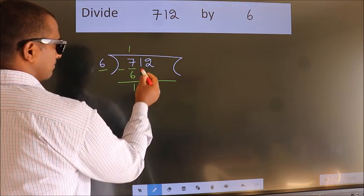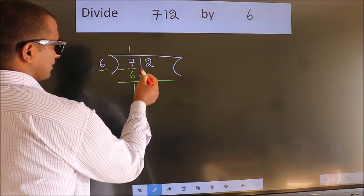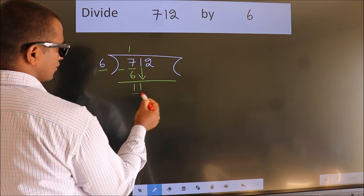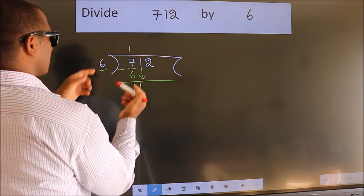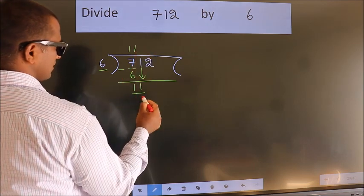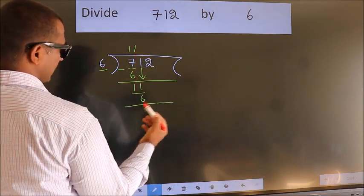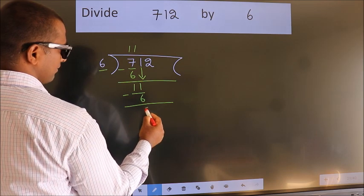After this, bring down the beside number. So 1 down. So 11. A number close to 11 in 6 table is 6 ones, 6. Now we subtract. We get 5.